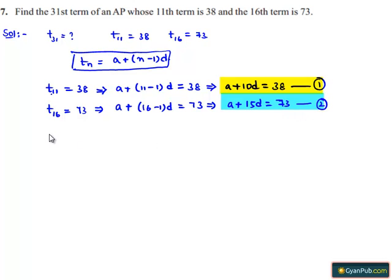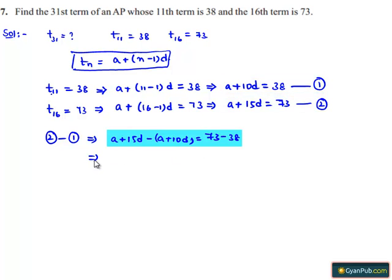Now let us subtract equation 1 from equation 2. That implies a + 15d minus (a + 10d) equals 73 minus 38, which equals 35.